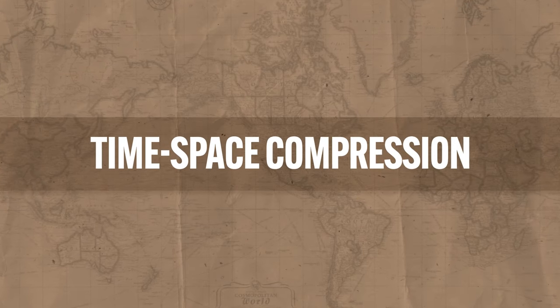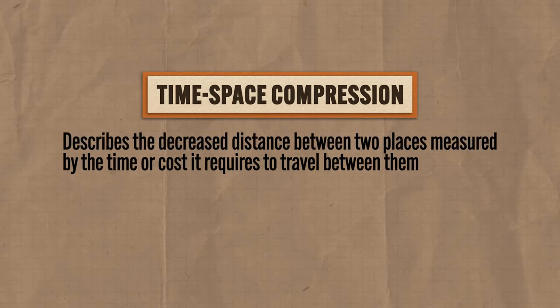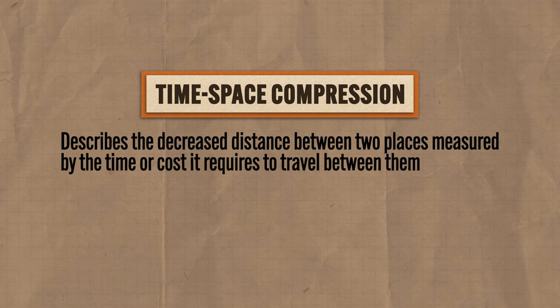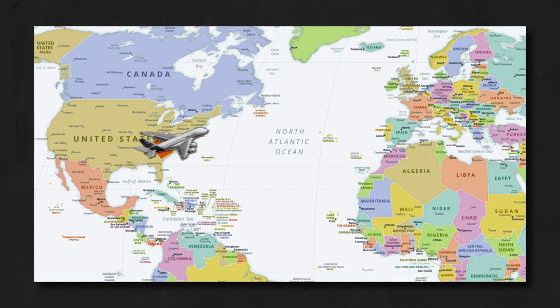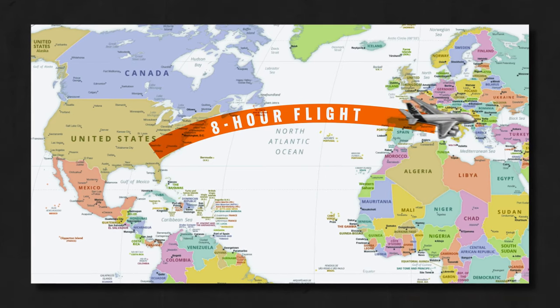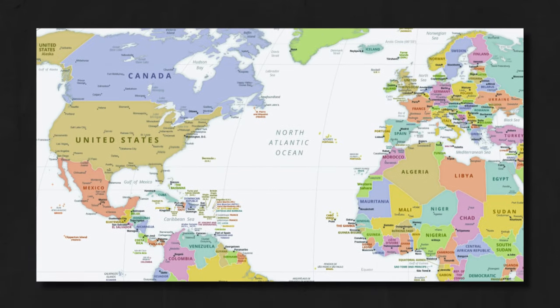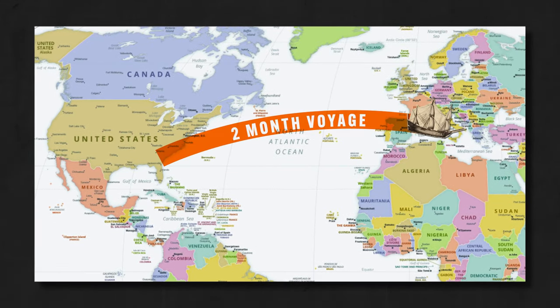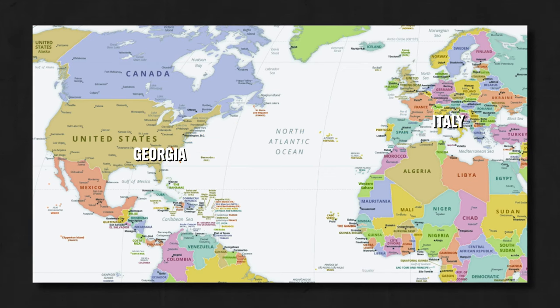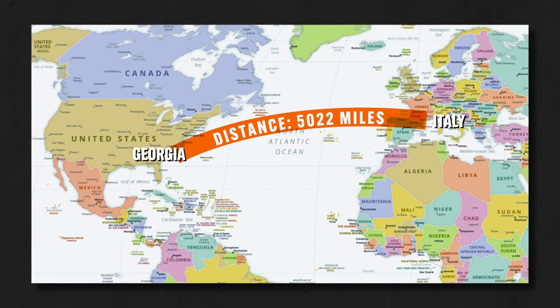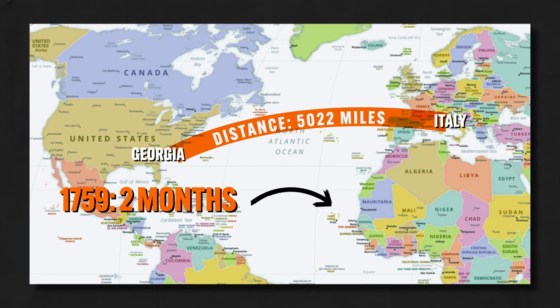The fifth spatial concept is time-space compression, which describes the decreased distance between two places as measured by the time or cost required to travel between them. For example, in 2008 my wife and I traveled to Italy — a miserable eight-hour flight with the guy in front reclining his seat the whole time. But in 1759 it would have taken two whole months on a ship full of nasty germs. Georgia and Italy are the same places they were in 1759, so the distance hasn't changed, but the time and cost required to travel there has significantly decreased. That's time-space compression, and it's a huge concept for geographers, especially as the world becomes increasingly connected through travel, politics, and economics.